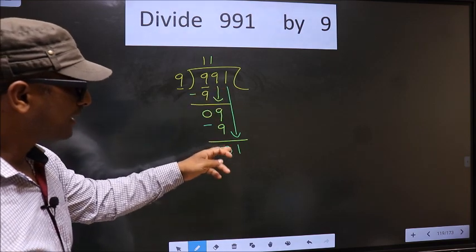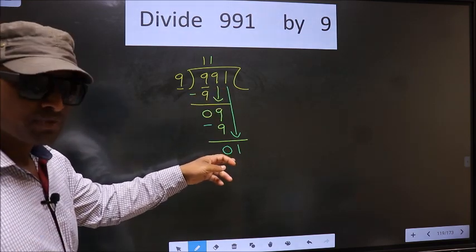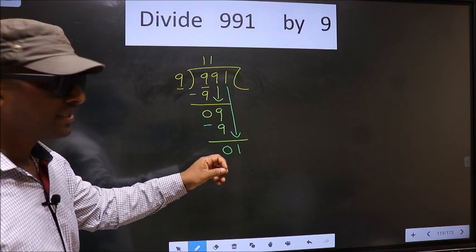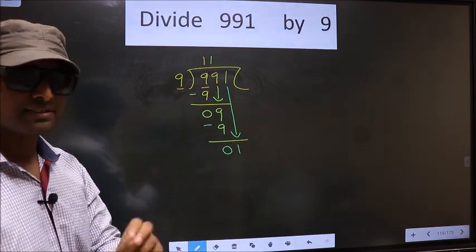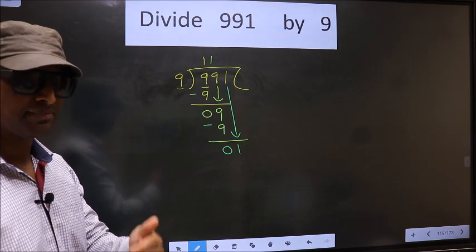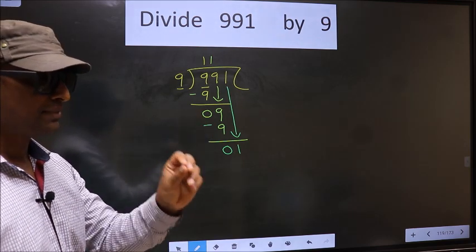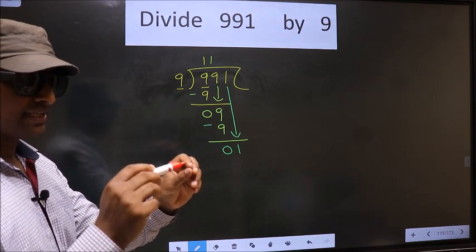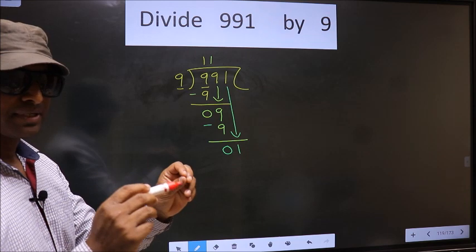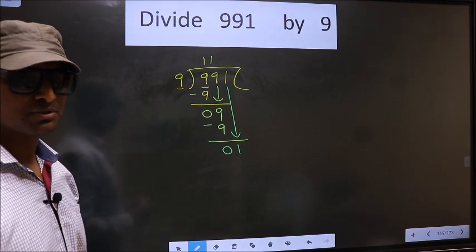Just now you brought the number down. And in the same step, you want to put a dot and take 0 here. Which is wrong. I repeat. Bringing the number down and putting a dot and taking 0 both at the same step, you are not supposed to do.